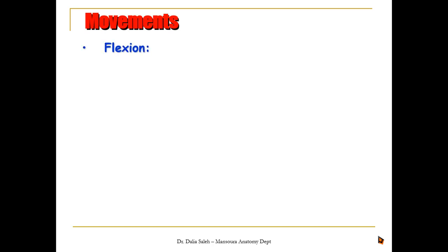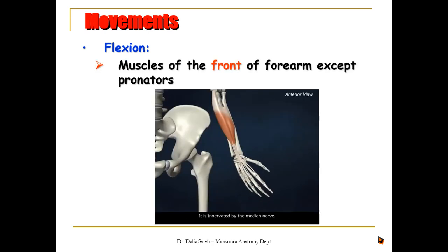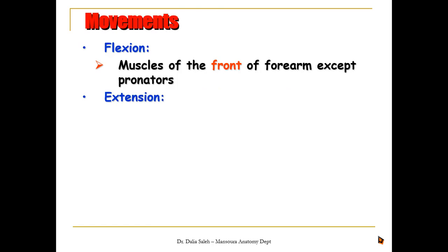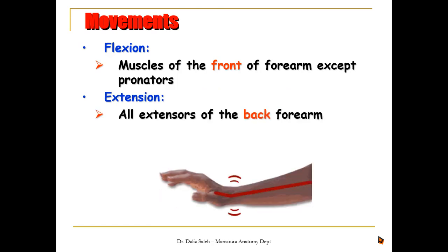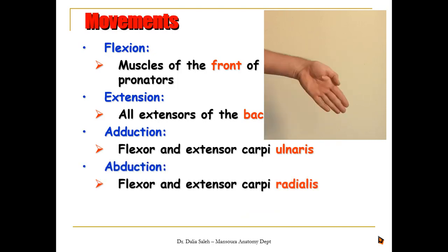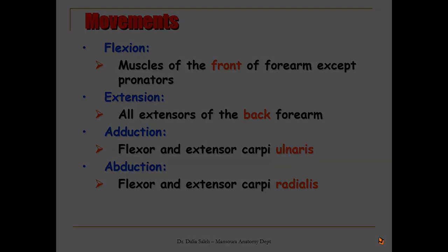For the movements of the wrist, it is a biaxial joint allowing flexion, extension, abduction, and adduction. Flexion is made by the muscles of the front of the forearm — superficial, middle, and deep groups — except the pronator teres and pronator quadratus. Basically, it is made by the tendons of muscles passing in front of the wrist joint. Extension is made by all extensors at the back of the forearm. Adduction is made by the flexor and extensor carpi ulnaris, while abduction is made by the flexor and extensor carpi radialis.